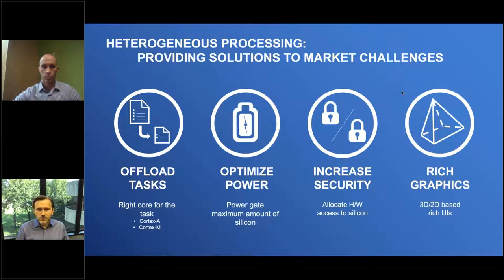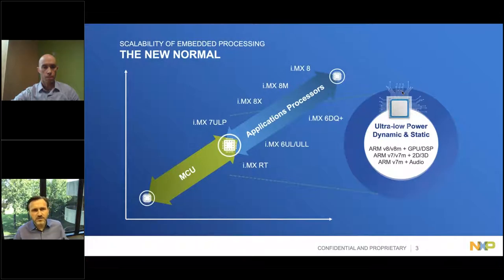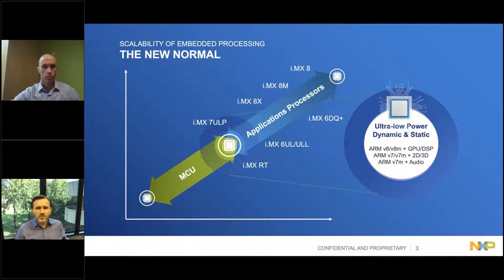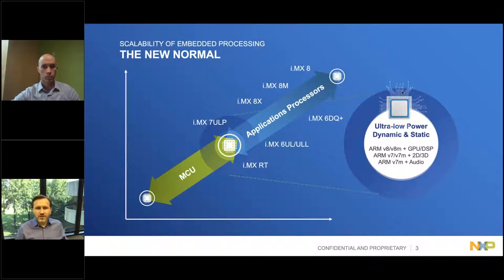Heterogeneous processing also gives you the ability to create a firewall to increase security — you can lock certain peripherals to a core and control sharing. The GPU is really a form of heterogeneous processing: any time you offload processing from the CPU onto the GPU, that's considered heterogeneous processing. This is our new normal — crossover processing. You're going to see customers come up from the MCU world and come down from the application processor world with the i.MX 7ULP.